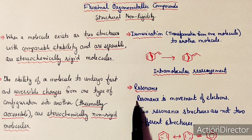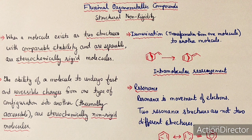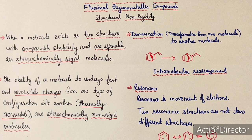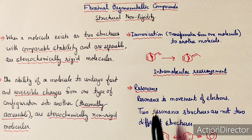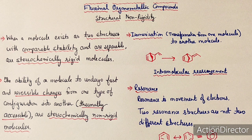In resonance, only the electrons move — the bonds are moving, but only the electrons move. The two resonating structures of benzene, for example, don't actually exist; they represent delocalization of electrons. So resonance is entirely different from stereochemical non-rigidity, because these resonating structures don't actually exist.